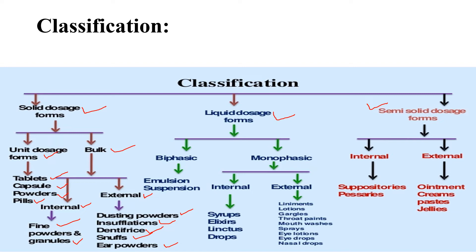Liquid dosage forms may be classified into two types: monophasic and biphasic. Monophasic forms are classified based on internal and external use. Internal use forms include syrups, elixirs, linctus, and drops.